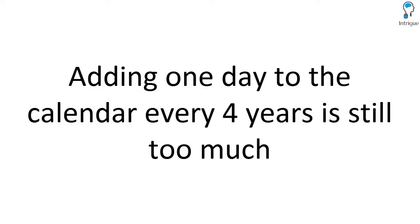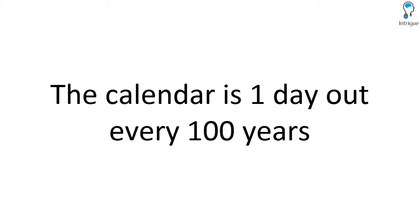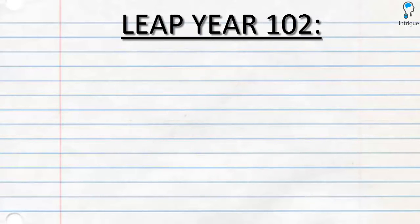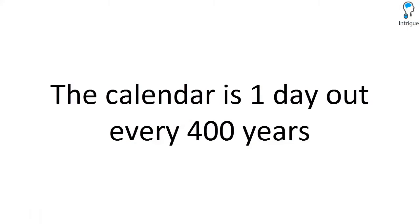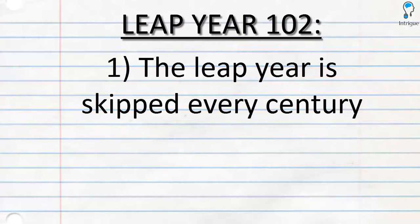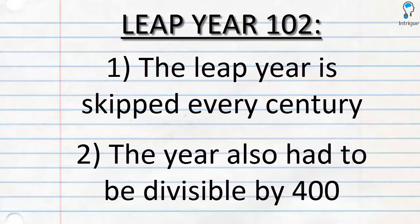Therefore, adding one day to the calendar every 4 years will still mean that the calendar is too fast, with one day out of sync every 100 years. Therefore, a new rule was adopted that the leap year would be skipped every century. But this still meant that one day was out of sync every 400 years. Finally, another clause meant that the leap year would be skipped every century, except when the year was also divisible by 400.